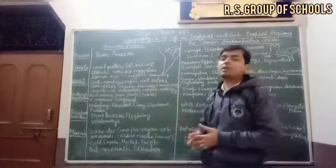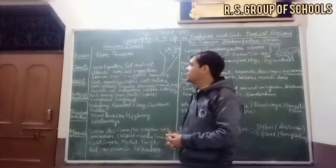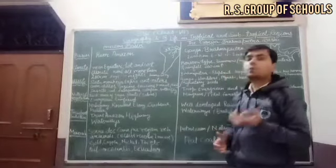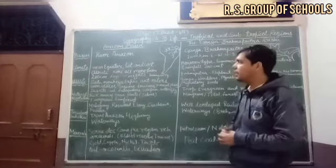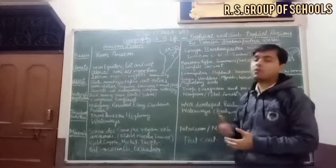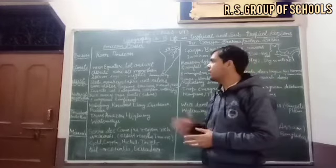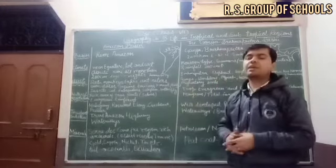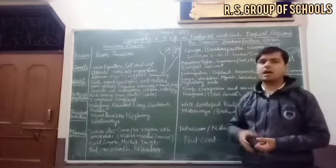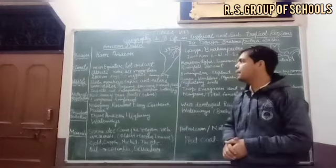Now we will talk about climate. The region lies near to the equator, so the climate is hot and wet. Due to much evaporation, rainfall occurs more than 200 cm. Days and nights are equal to each other and humidity is also high because of the moisture content present in the atmosphere.